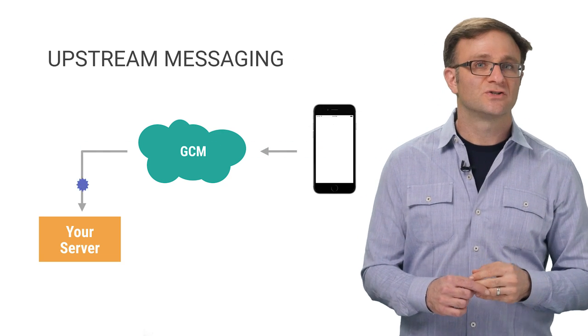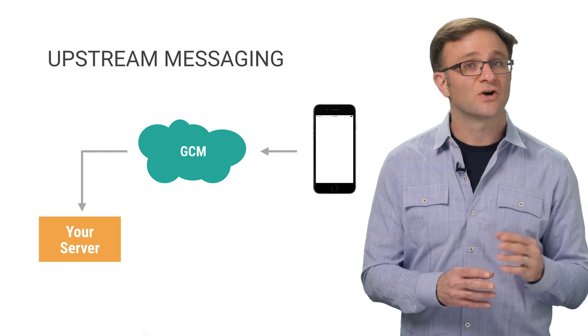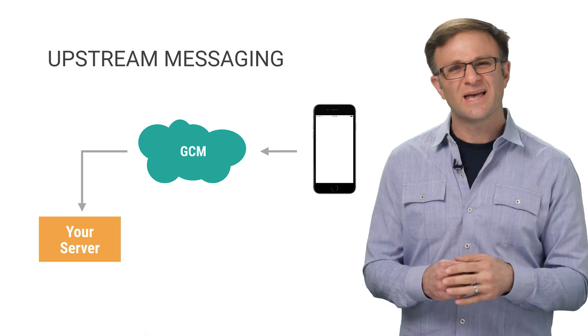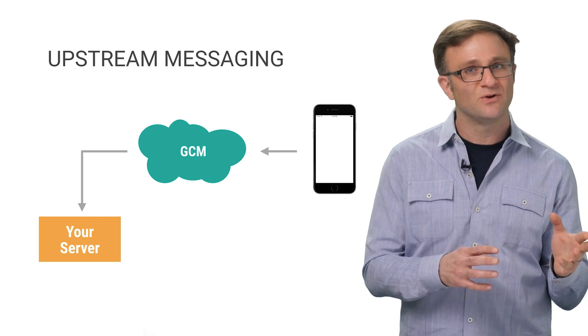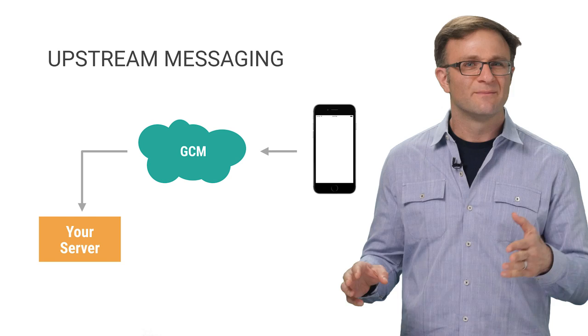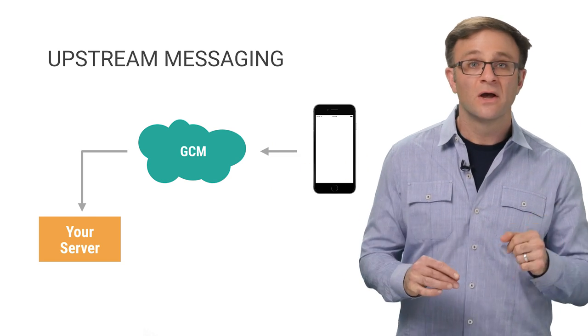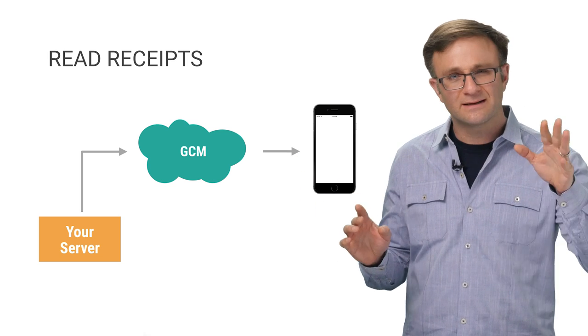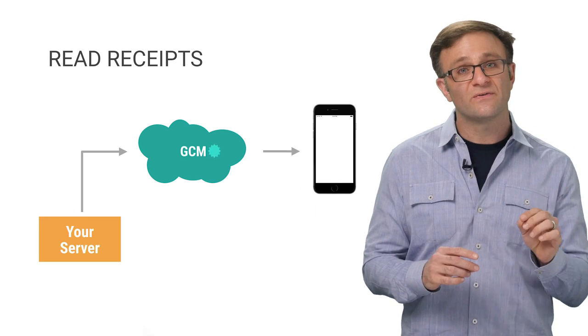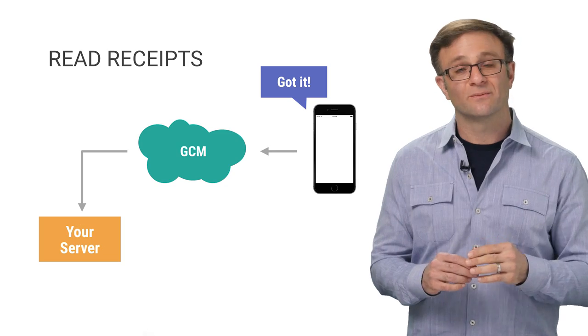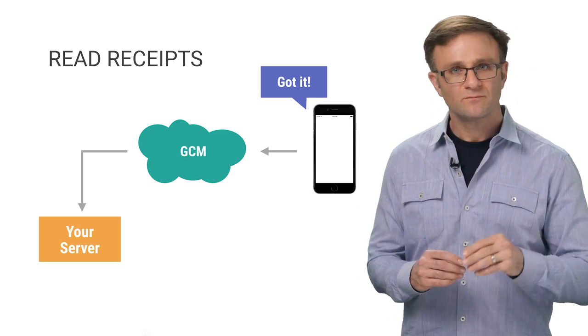GCM has other useful features, too, like upstream messaging, which allows your app to communicate to your server through GCM. This can be helpful in cases where you might want some lightweight communication from your clients to your server, but don't feel like dealing with the hassle of setting up and maintaining a full-blown server open to the entire world. Or read receipts, where in some — but not all — situations, you can be notified that a user has received your message, something you can't normally do through APNS alone. And in case you're wondering, all this is free — as in please send us $0 — and it's using much of the same infrastructure that Google uses for its own apps, so it'll probably scale for yours.